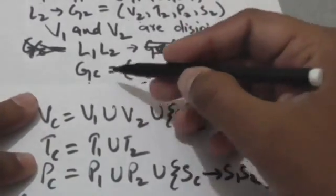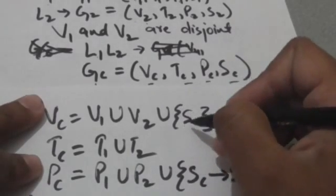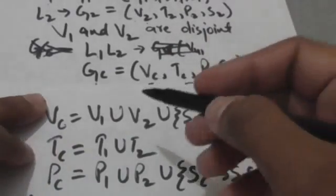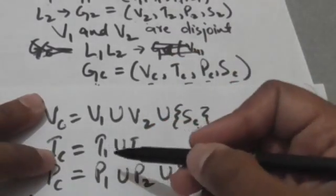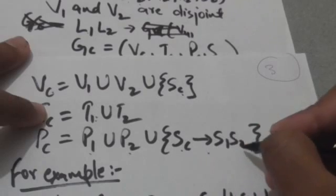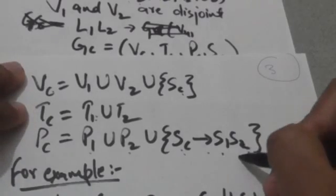Grammar GC will contain all terminals of grammar G1 and G2, so Tc equals T1 union T2. GC will contain all productions of grammar G1 and G2, and also a production: Sc derives S1 S2, where Sc is the start symbol of GC, S1 is the start symbol of G1, and S2 is the start symbol of G2.